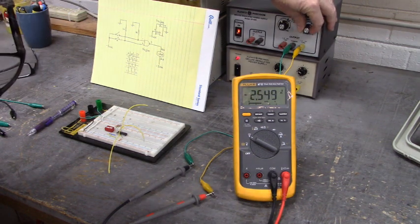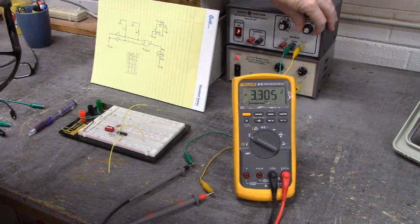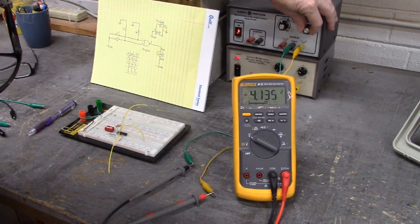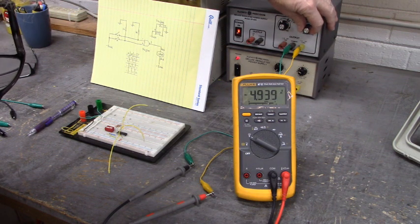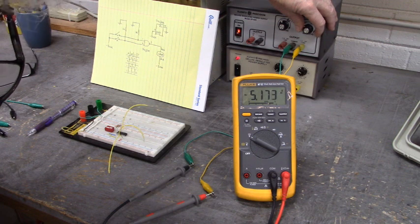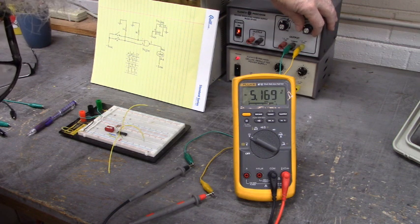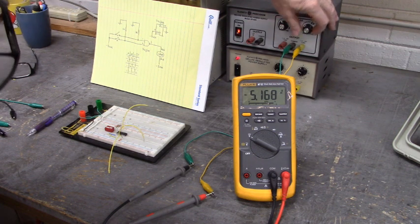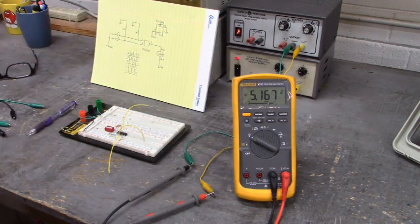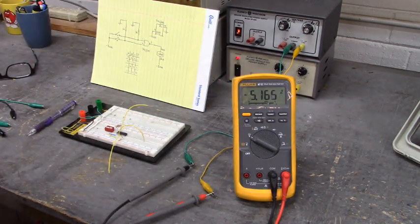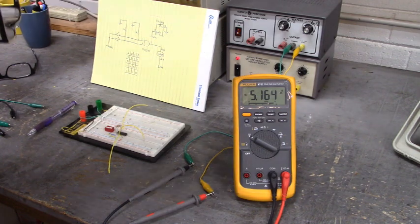There is negative two, negative two point five, negative three, negative four, negative five point one seven, five point one six. This is negative five volts. We are going to leave it right there. Let's power that power supply down.